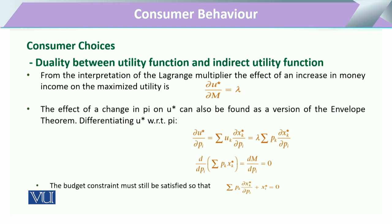Then what is the difference in the duality? The interpretation of the Lagrange multiplier, which we have many times utilized to calculate the change in utility with respect to the change in income, tells us that an increase in money income will have an incremental effect on utility. Whenever the consumer has more and more of its budget, he has a possibility that he will be on a higher indifference curve or higher utility function. The effect of a change in price can be calculated with respect to either x1 or x2 when the consumer has two commodities.